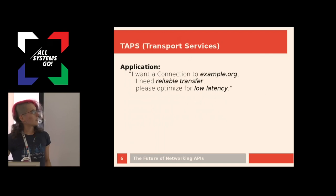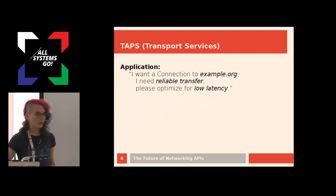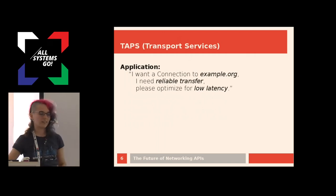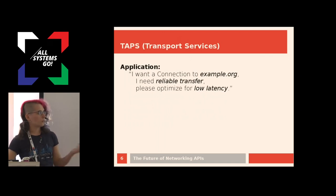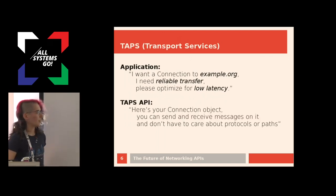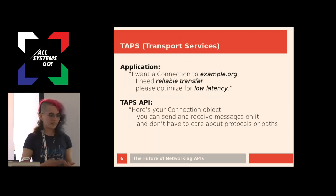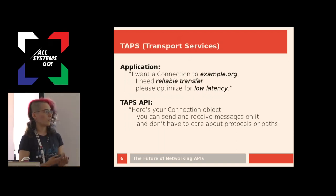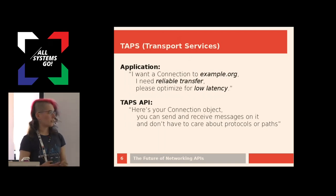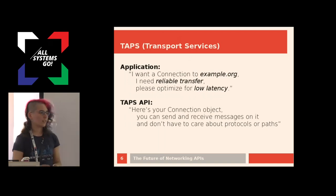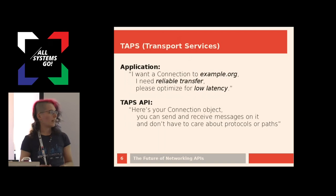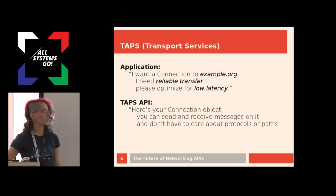The application says something like this — something hopefully rather basic, though it can be more complicated. Some applications want to optimize low-level networking details and can still do that through our API. But maybe it only wants to say these three things. Then the TAPS API gives back not one socket where you can either send or not, but it can give back a connection object. On this connection, which is going to be a valid transport layer connection to some endpoint, the application can send messages and receive messages, and it doesn't have to care about the details of the protocols or paths.